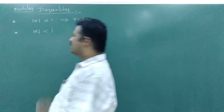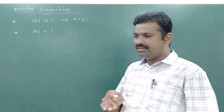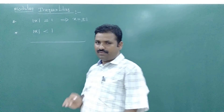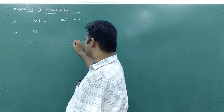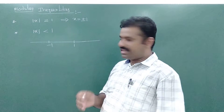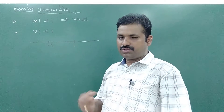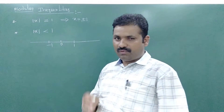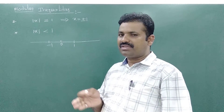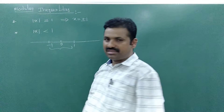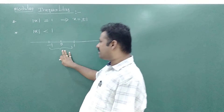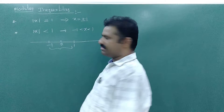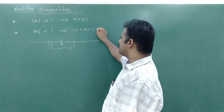Now, mod x less than 1. I want all the numbers on the real line such that mod x is less than 1. When mod x equals 1, x equals plus or minus 1. Can you tell me what numbers satisfy mod x less than 1? For example: 0.1, 0.5, 0.2, 0.9, minus 0.1, 0, minus 0.5 — mod of minus 0.5 is 0.5, which is less than 1. So all the numbers in between minus 1 and 1 satisfy this inequality. Whenever mod x less than 1, that implies minus 1 less than x less than 1.